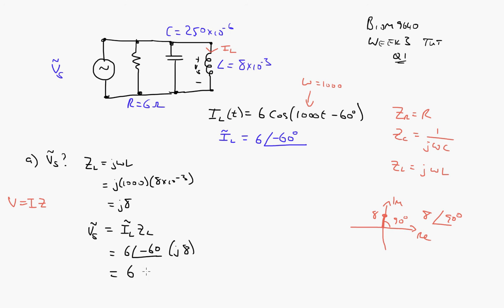So we have 6 minus 60 and 8 at an angle of 90 degrees. And multiplying them together, we multiply the magnitude so we get 48. And because they're multiplied, we add together the angles. So we end up with 30 degrees. And it's a voltage. Remember, this is Vs as a phasor. So that's going to be volts. Of course. Okay.